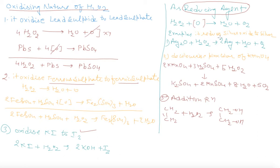For example, it reduces silver oxide to silver. Silver oxide reacts with H2O2 to give silver, H2O and O2.